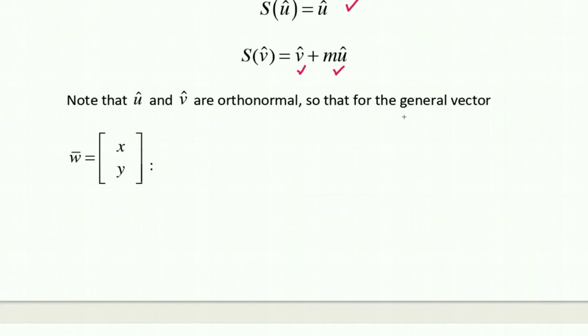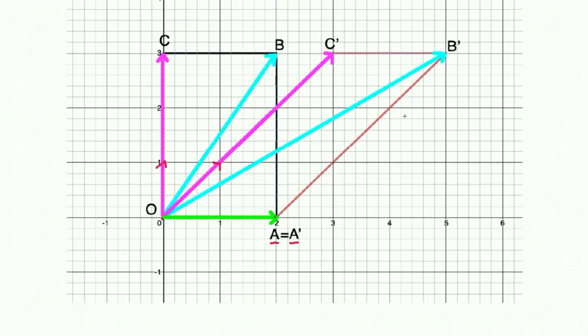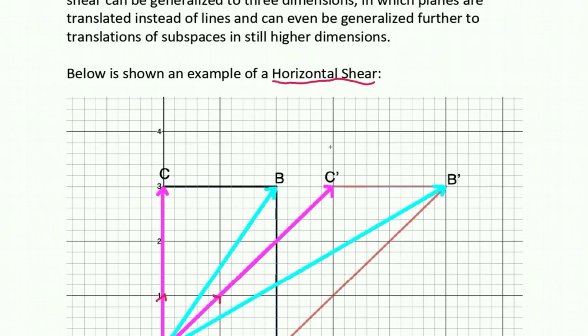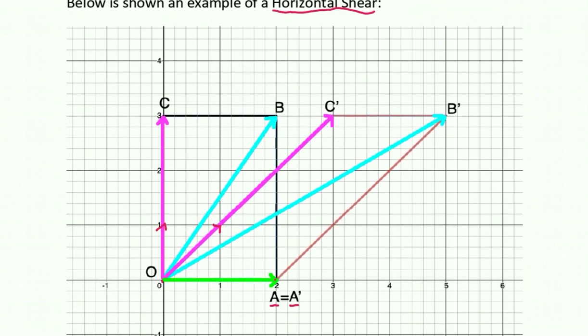I hope you understood shear transformations. I'll just go over it one last time. All points along a given direction remain fixed, while other points are translated parallel to the line by a distance proportional to the distance from the line. So keep that picture in mind and you should be good.